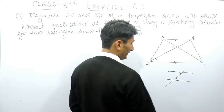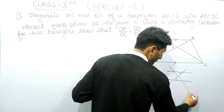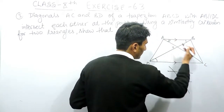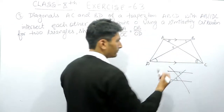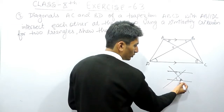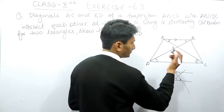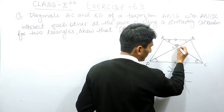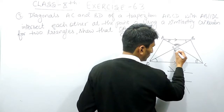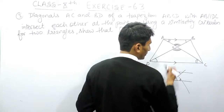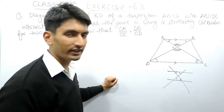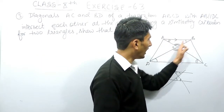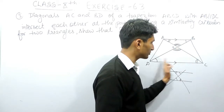Similarly, if there is another transversal AC, then this angle must be equal to this angle — again, alternate angles. This angle must be equal to this angle. We can also say that the third angle must be equal to the corresponding third angle, because these two are vertically opposite angles. So we have proved that three angles of one triangle are equal to the corresponding three angles of the other triangle.